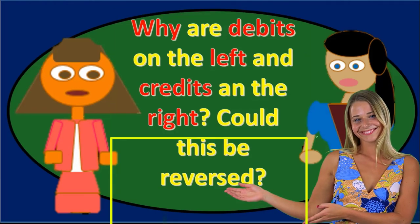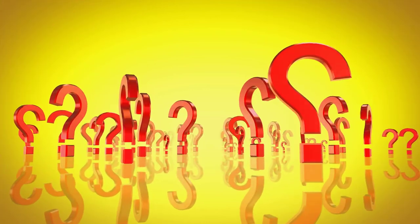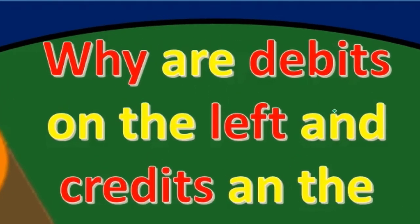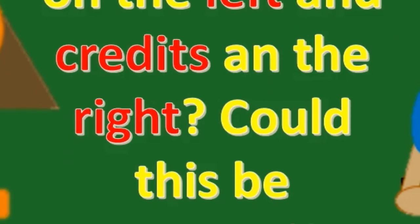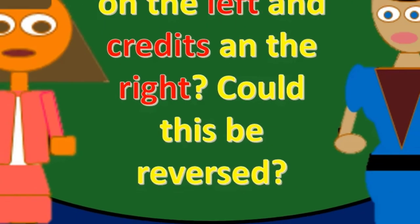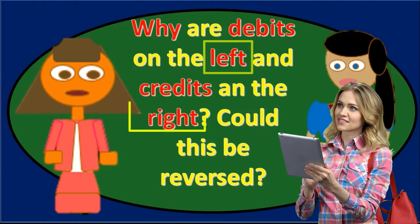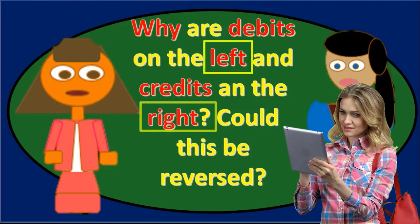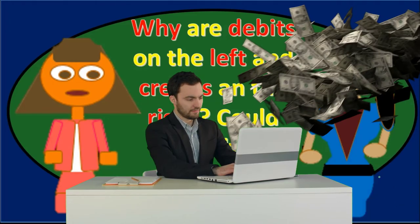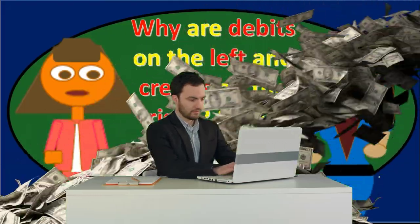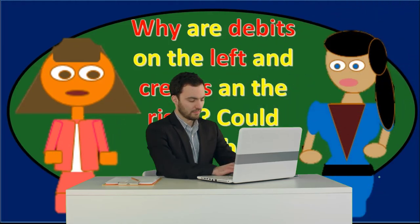To answer that question, we first want to start with the definition of what debits and credits are. It's a definition that many people are disappointed in when they first hear it, or almost don't believe its simplicity: debits are just items recorded on the left side of a T-account, and credits are items recorded on the right side of a T-account. That's really the only definition.